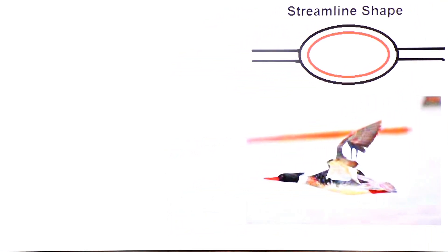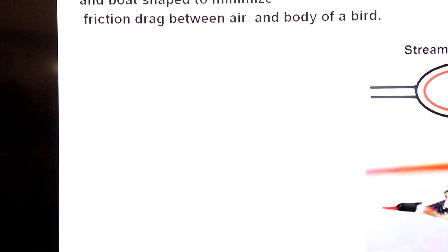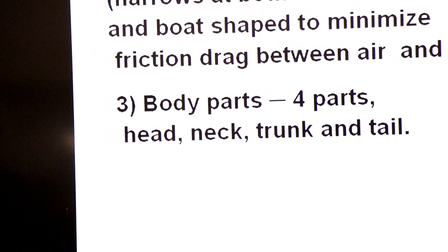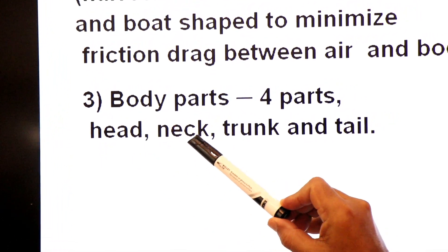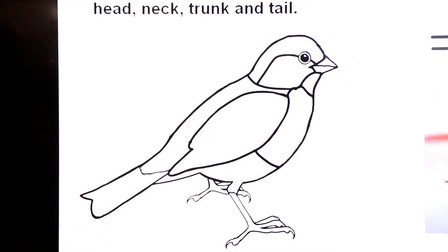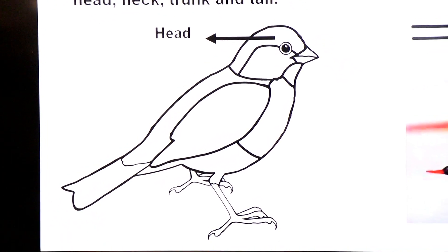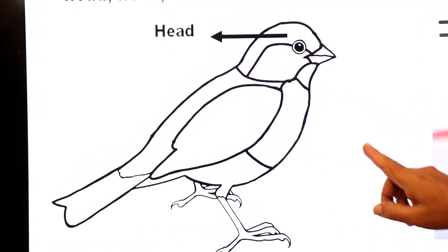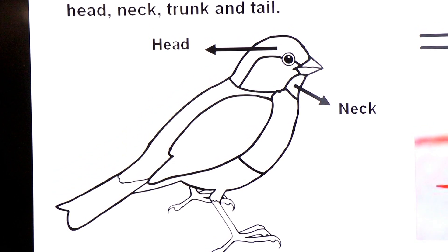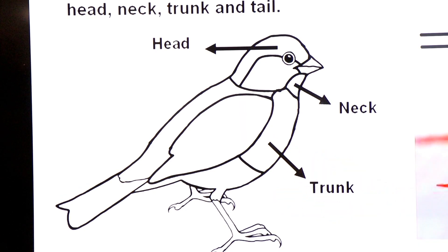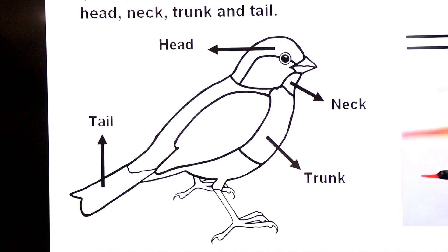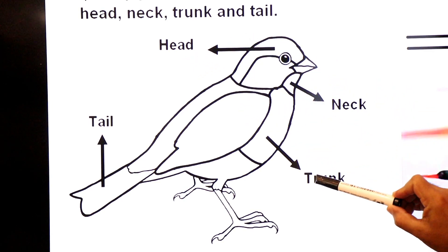The body of a bird has four parts: head, neck, trunk, and tail. Look at the diagram — the first part is the head region, second is the neck, third is the trunk region, and the fourth part is the tail.